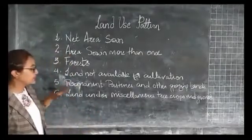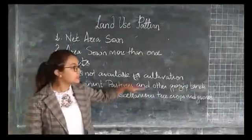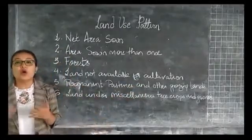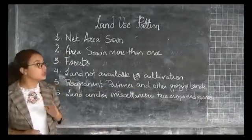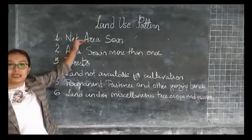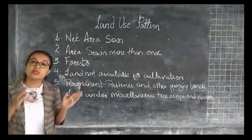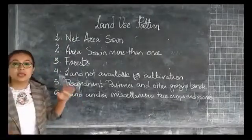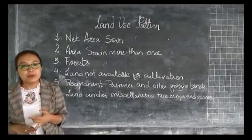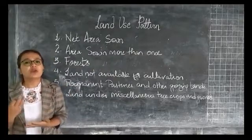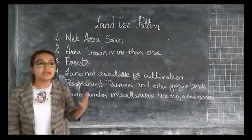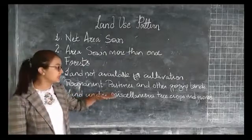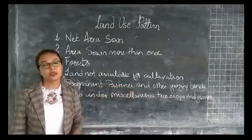The next category is land under miscellaneous tree crops and groves. This includes all cultivable land which is not included under net area sown but is put to some agricultural uses. Land under casuarina trees, bamboo, bushes, etc., which are not included under orchards, are classified under this category.